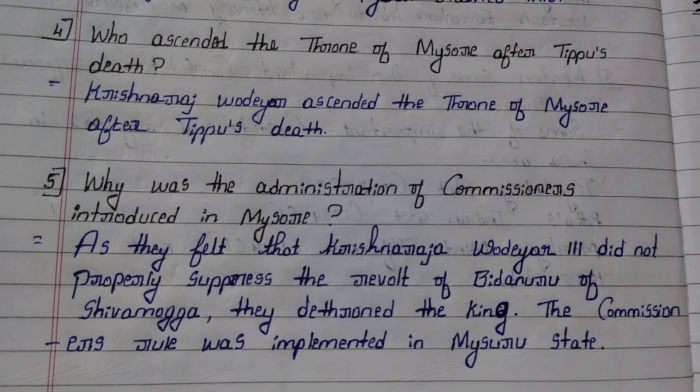Fifth question: Why was the administration of commissioners introduced in Mysore? Answer: As they felt that Krishna Raja Vodayar III did not properly suppress the revolt of Bidanuru of Shivamogga, they dethroned the king. The commissioner's rule was implemented in Mysore state.